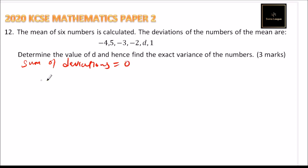This implies that if we add -4 + 5 + (-3) + (-2) + d + 1, it should be equals to zero. So when you add up this you get...